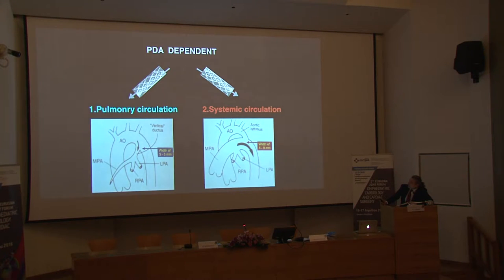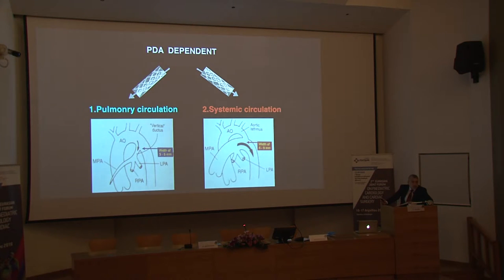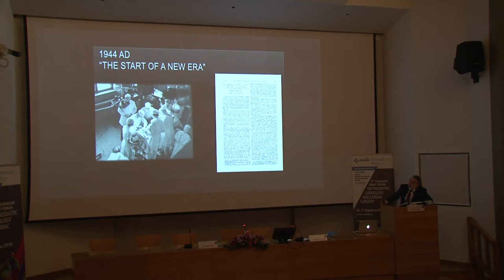The main topic today is PDA-dependent pulmonary and systemic circulations, starting with pulmonary circulation first. Since the first Blalock-Taussig shunt was performed in 1944, it began a new era for patients with decreased pulmonary blood flow, and it has been the mainstay of therapy ever since — either as primary palliation or as a bridge to total correction.